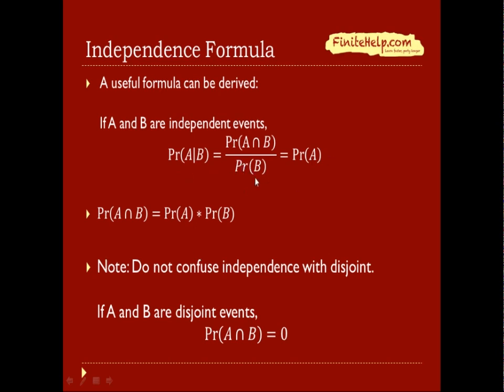So I'm going to multiply this probability of B over on both sides here. So now we have A intersect B is the probability of A times the probability of B.